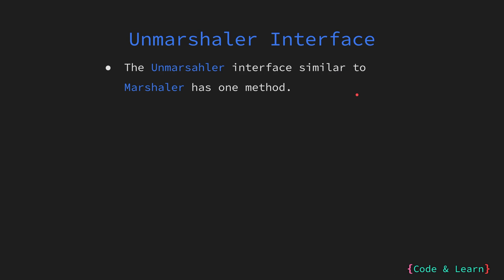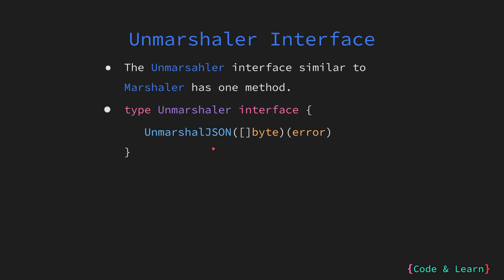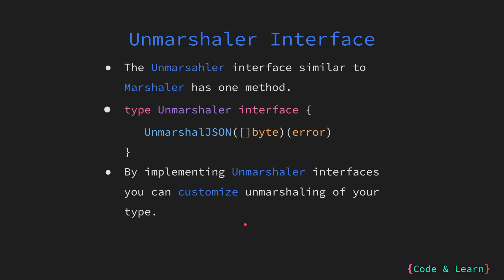Next, we have the unmarshaller interface. It too has a single method called UnmarshalJSON, that accepts a byte slice and returns an error. By implementing the unmarshaller interface, you can customize the behavior of unmarshalling JSON data into your custom type. As a reminder, marshalling is when we convert Go types into JSON types, and unmarshalling is when you convert back from the JSON data into your Go types.